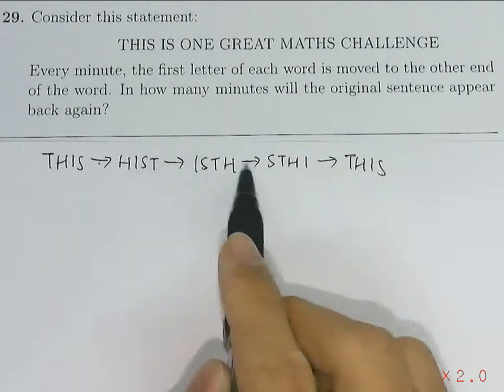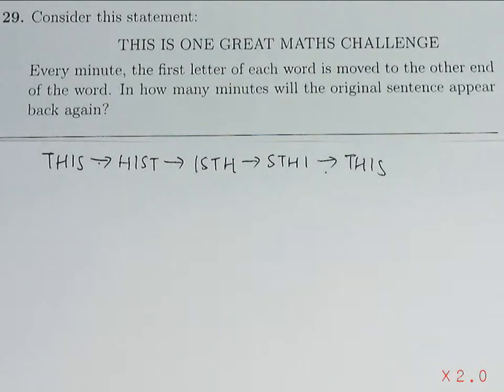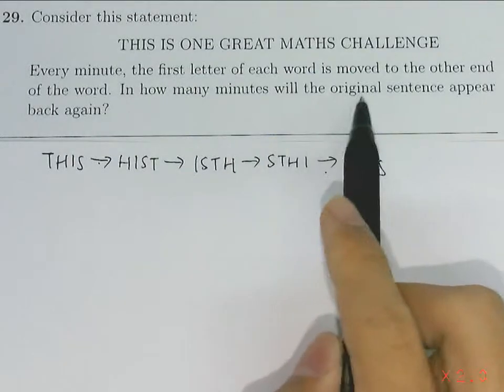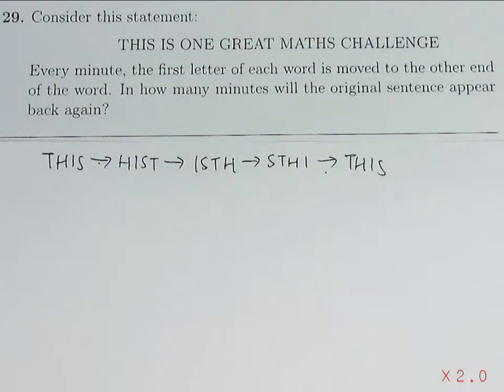Every arrow is one minute. So this will apply to all the words. And the question asks, in how many minutes will the original sentence appear back again? So we need all the words to appear back at the same time to coincide at the same minute.